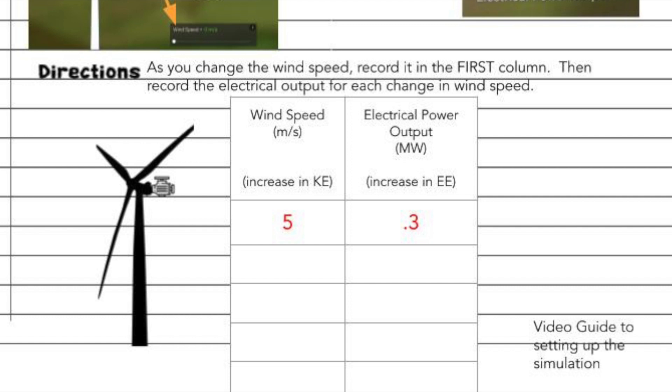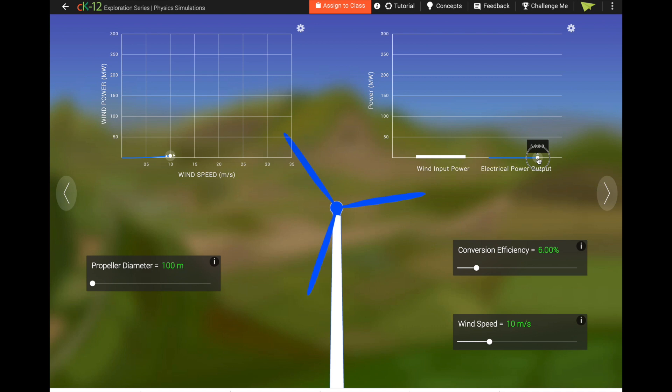Now that we've collected our first piece of data, we can go back to our notebook page and enter the wind speed as 5 meters per second and the electrical power as 0.3 megawatts. Continue collecting data by changing the wind speed to 10 meters per second and viewing the electrical power output, and add that to your chart.